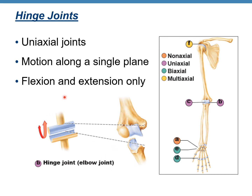Hinge joints are uniaxial joints, similar to the hinge of a door that allows only two movements — open and close. The same on your body: a hinge joint allows only flexion and extension, a motion along a single plane. An example of a hinge joint is the elbow joint — you can do elbow flexion and elbow extension.